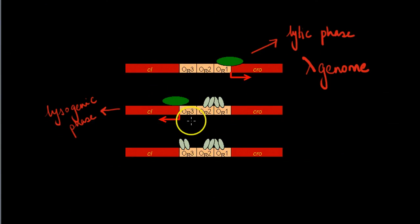In the presence of the CI protein, the CI gene will be transcribed, resulting in the lysogenic phase.